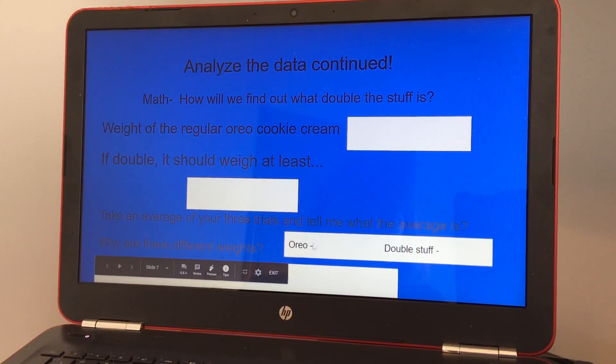So you add up all three weights for the Oreo and then divide by three. And the double stuffed, add up all three weights and then divide by three. And then you're going to see, is it really double the stuff?